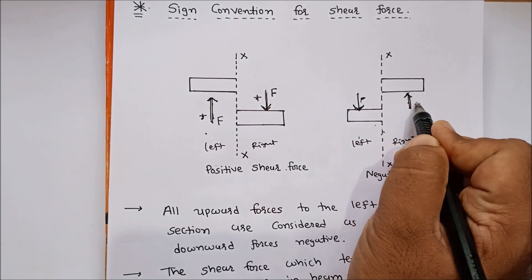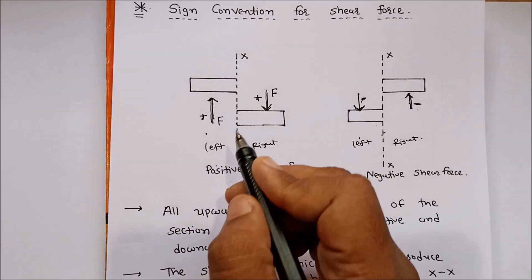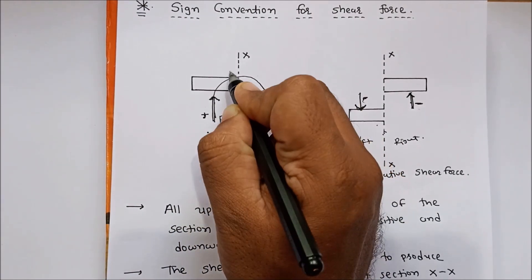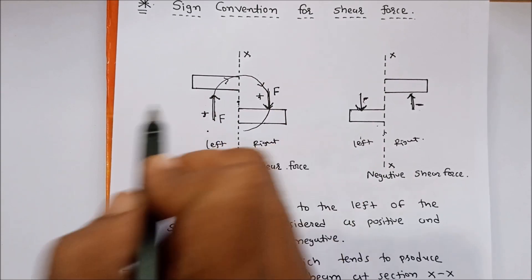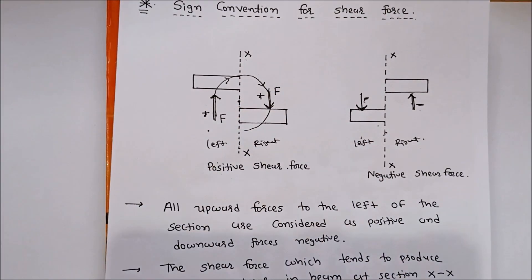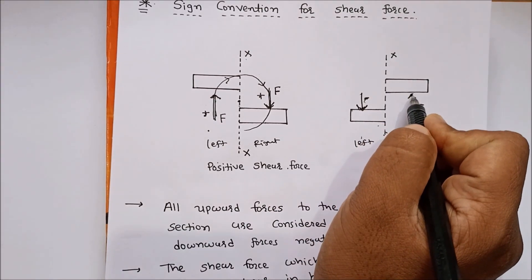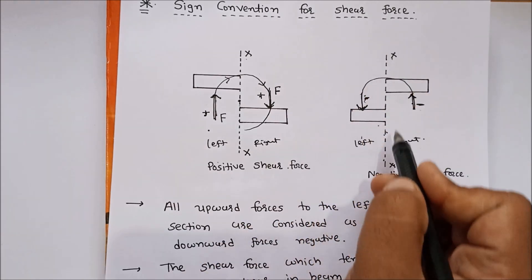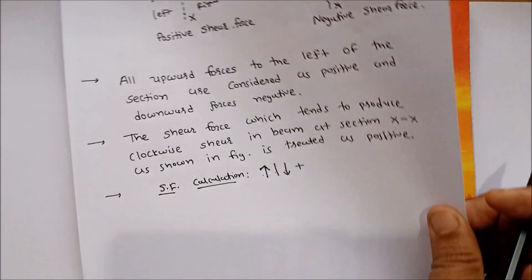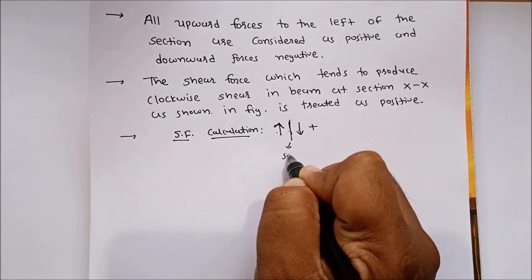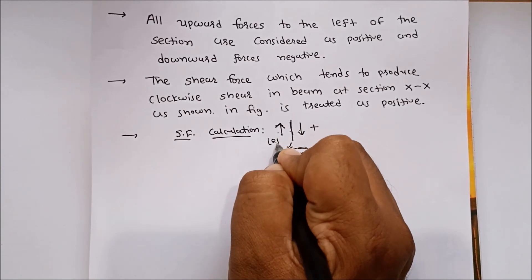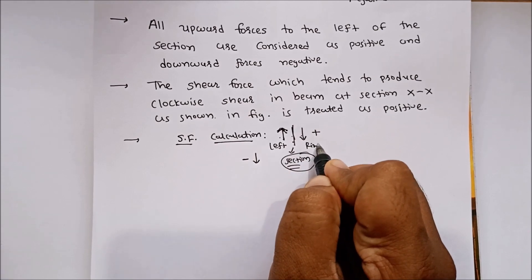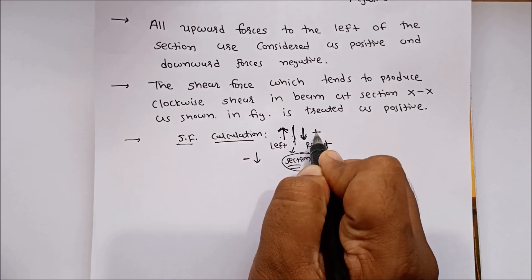In another way, the shear force which tends to produce clockwise shear in the beam at section XX is taken as positive. Similarly, the shear force which tends to produce anticlockwise shear in the beam at the section is taken as negative. If we start calculation from the left side, upward force is positive and downward force is negative.